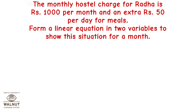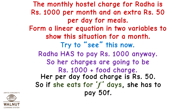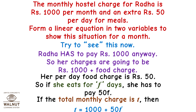Now let's have a look at word problems. The monthly hostel charge for Radha is Rs. 1000 per month and an extra Rs. 50 per day for meals. Form a linear equation in two variables. Radha pays Rs. 1000 anyway, plus food charge. If she eats for f days, she pays 50f. If the total monthly charge is t, then t = 1000 + 50f. That is our linear equation in two variables.